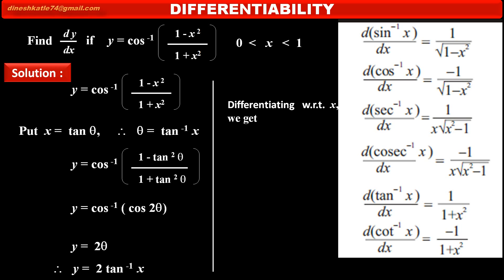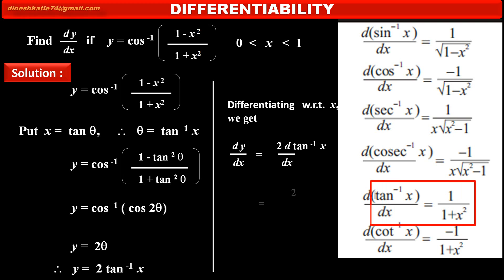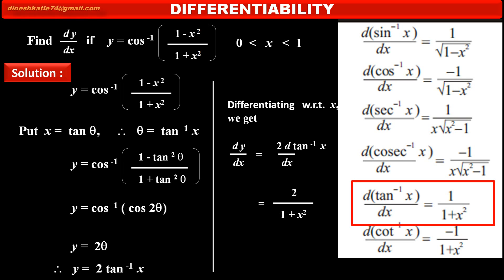Differentiating with respect to x, we get dy/dx equal to 2 into the derivative of tan inverse x with respect to x. The derivative of tan inverse x is 1 upon (1 plus x square). So it becomes 2 into 1 upon (1 plus x square), that is 2 upon (1 plus x square). This is the derivative of the given inverse trigonometric function.